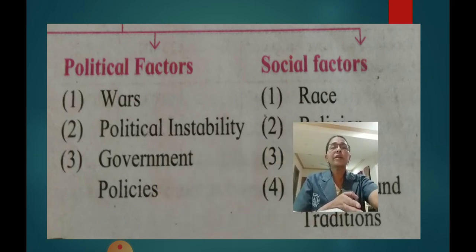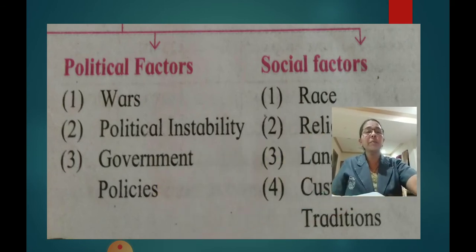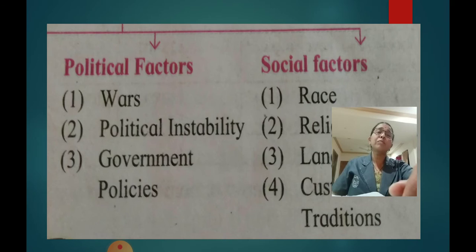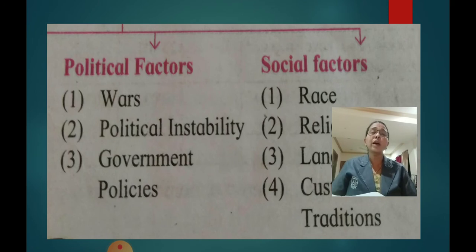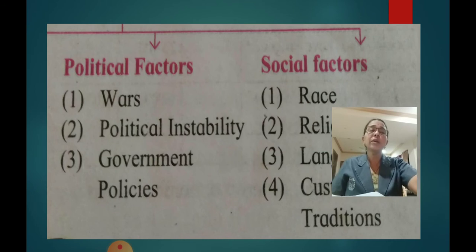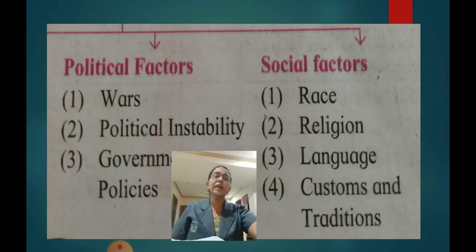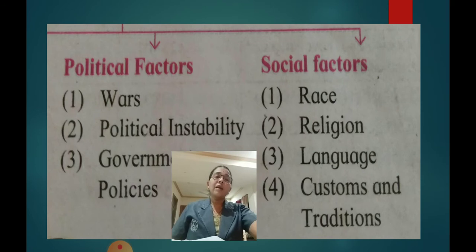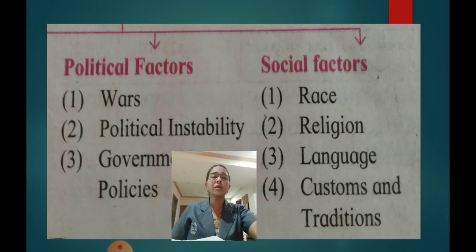Political factors like wars, political instability, and government policies — if wars are there, if political instability is there, leaders keep changing and are not good, or government policies are not followed, then the population also gets disturbed. Social factors include race, religion, language, customs and tradition. All these factors affect the population distribution.